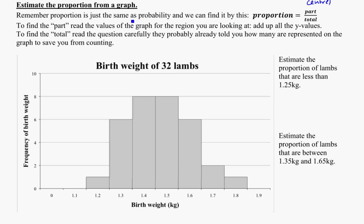And that word proportion, keep in mind it's basically the same thing as probability, and we find it in the same way, where the proportion is equal to the part over the total. So to find the part, we need to read the values off the graph.